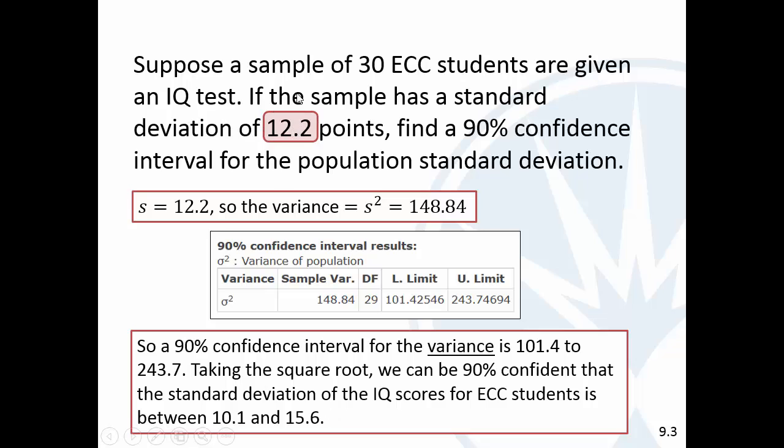But we want to take the square root. So the standard deviation then is between 10.1 and 15.6. So we got a pretty small standard deviation, but a 90% confidence interval does include the 15 that it's supposed to be. So maybe we just randomly happened to get a group of 30 that had a smaller standard deviation than what they were supposed to.